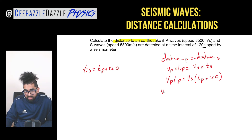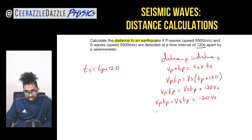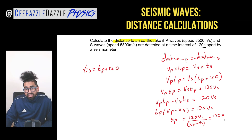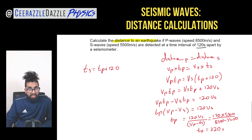Multiplying out: Vp·Tp = Vs·Tp + 120·Vs. Grouping like terms: Vp·Tp − Vs·Tp = 120·Vs. Factorizing: Tp(Vp − Vs) = 120·Vs. Therefore: Tp = 120·Vs ÷ (Vp − Vs) = (120 × 5500) ÷ (8500 − 5500). The time taken for the P wave is 220 seconds.